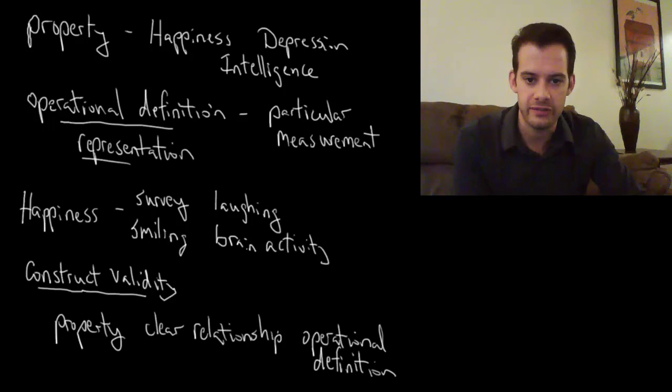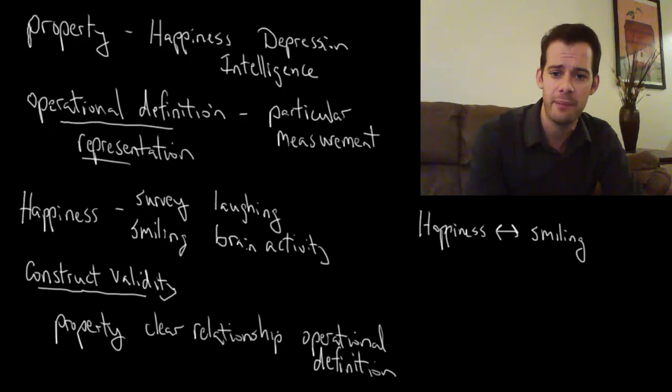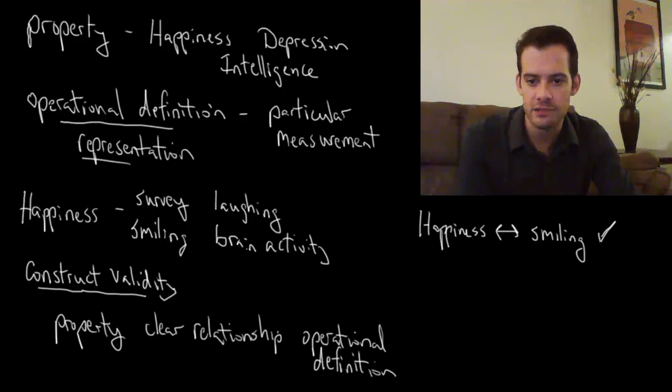So let's use that example. I want to know about happiness, and I'm going to measure smiling behavior. We're going to ask, is there a clear relationship between these two things? Yeah, people smile when they're happy. When people are unhappy they tend not to smile so much. So this seems like it has construct validity.